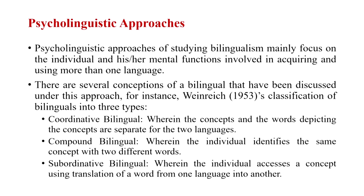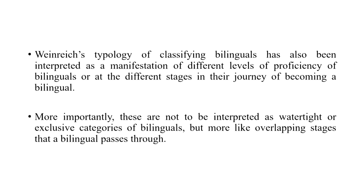The third type is the subordinative bilingual — someone who is just beginning to learn a second language. When accessing a concept through a second-language word, they typically translate that word into a first-language word and then access the concept. For many of us, when talking in English, we translate the English word into Hindi and then make sense of what is meant. Similarly, when speaking, we translate thoughts happening in Hindi to English. This is typically what happens with a subordinative bilingual.